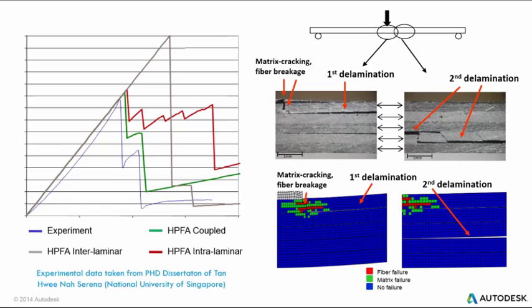Note how the fiber and matrix damage directly affects the response of the structure by spawning a delamination, which in turn drives further delamination later in the load history. The delamination and intra-ply failure must be modeled simultaneously, as we must create a separation of the plies affected by the delamination, so the load path can be modified by the finite element analysis.